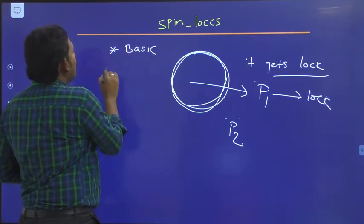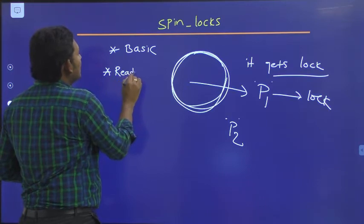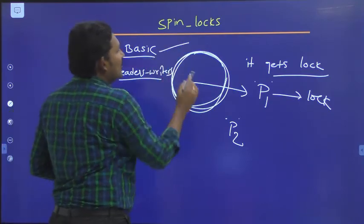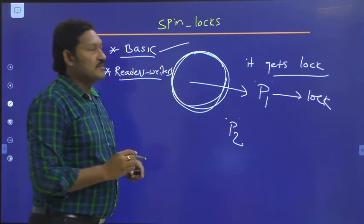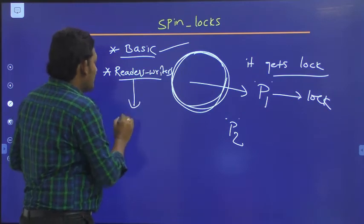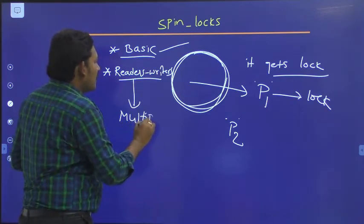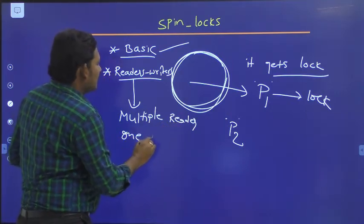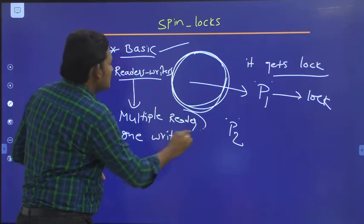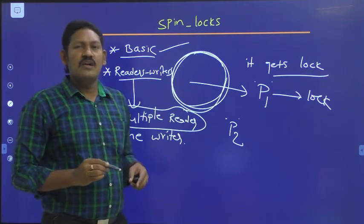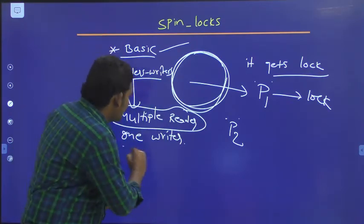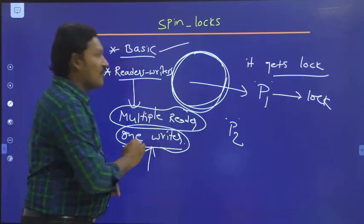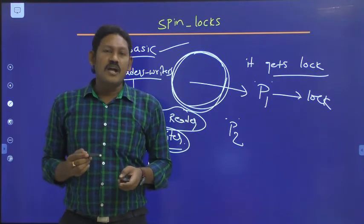In a reader-writer spin lock, we have multiple readers but only one writer. We stop all readers and do not allow any read operations while the writer performs the write operation. Once the write operation is complete, all readers are then allowed to perform read operations.